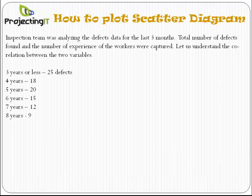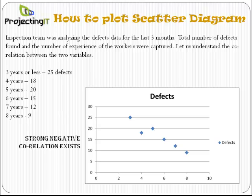Here is a small example from a quality inspection process, where the inspection team had captured the number of defects found in the last three months and compared it against the number of years of experience of the technicians. Plotting a scatter diagram indicates that there is a strong negative correlation between the variables.